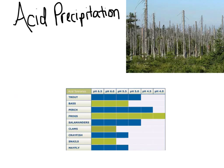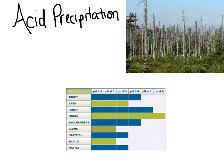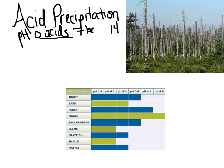Acid precipitation is one of our success stories, because even though we've caused it, we've figured out a way to reduce it. Recalling the pH scale from 0 to 14, 7 is in the middle — those are neutral things like pure water. Everything below 7 is acidic, and everything above 7, between 7 and 14, are bases. Acid precipitation is defined as anything with a pH of 5.6 or less.